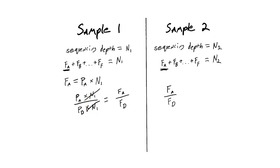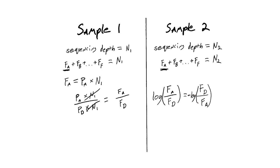There's one last thing to address: the comparison of feature A over feature D is not going to be the same as the comparison of feature D over feature A. That's not desirable, but it's easy to fix. If we take the log of this ratio, the log of the other side is simply its negative. So log(A/D) = -log(D/A). This is our log ratio, and it's what most compositional methods are based on.